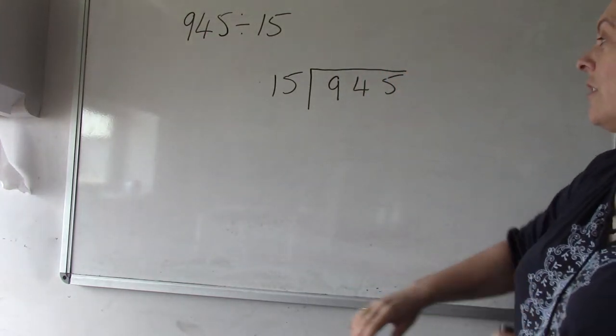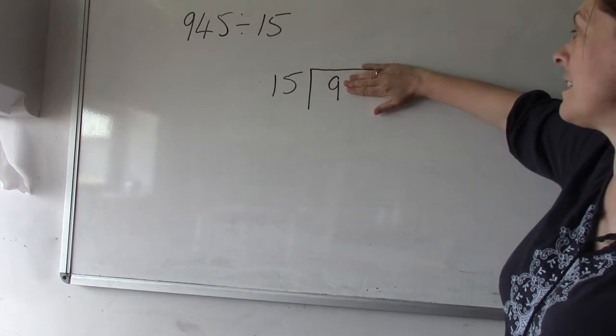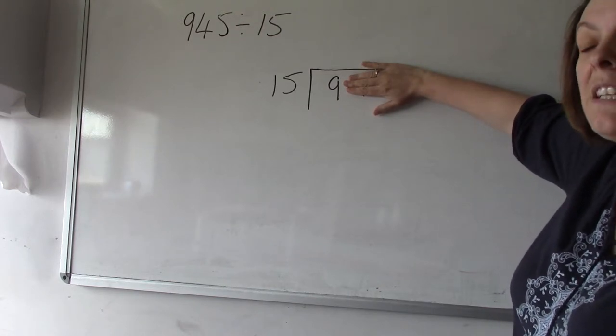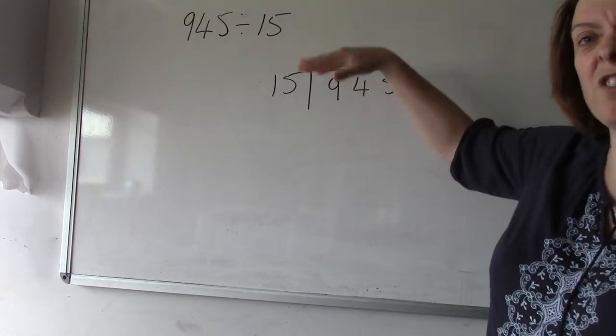When you start doing your division, you're going to start by looking at the first number that's inside the bus stop there and it's a 9. 9 is smaller than 15, so we know 15 doesn't go into 9 at all. So we could put 0 up here but we could just leave it.